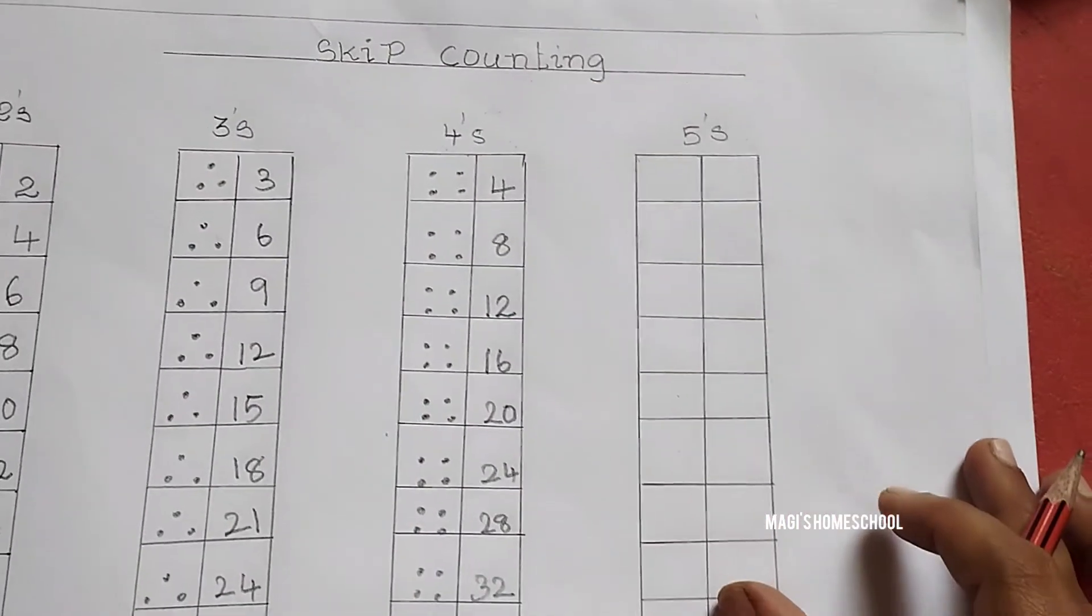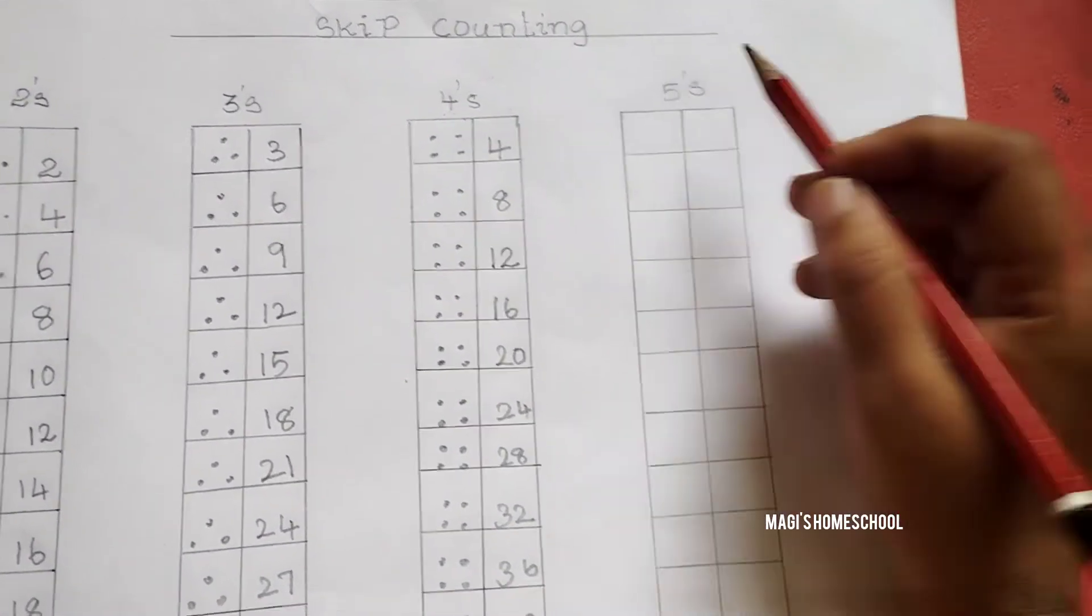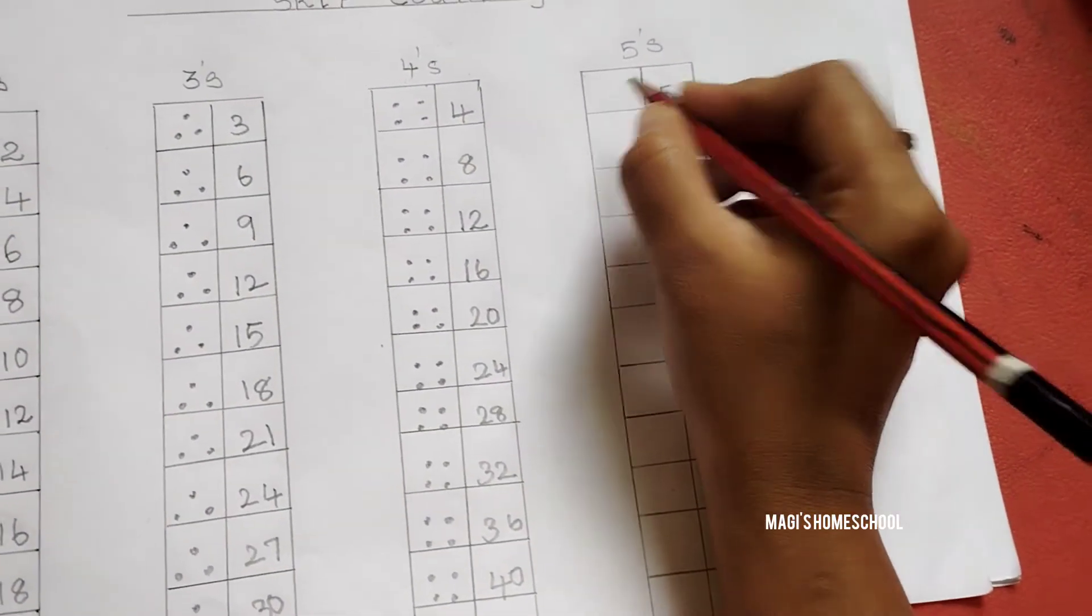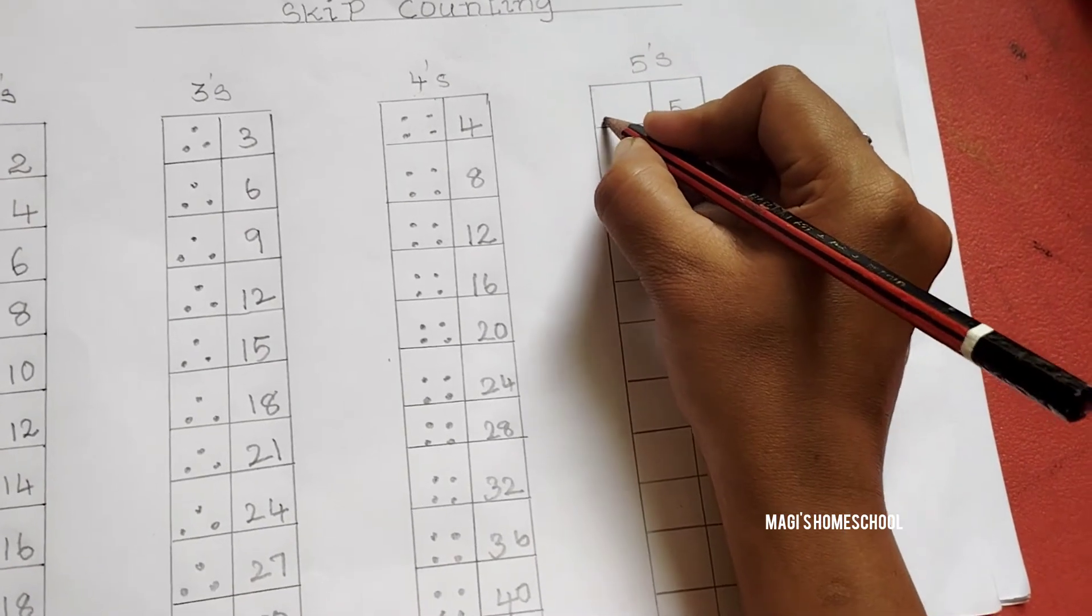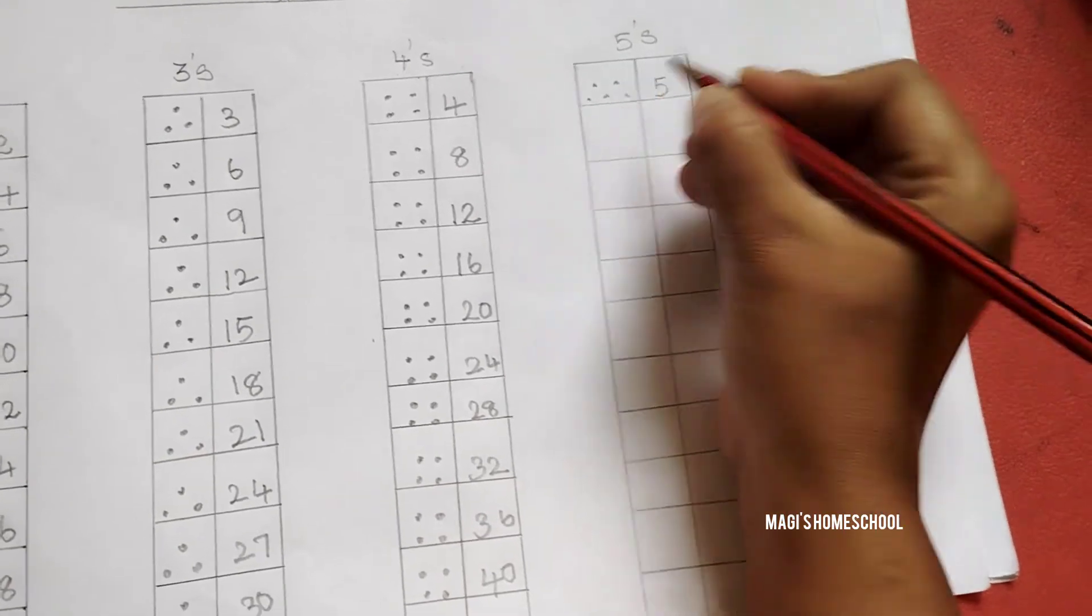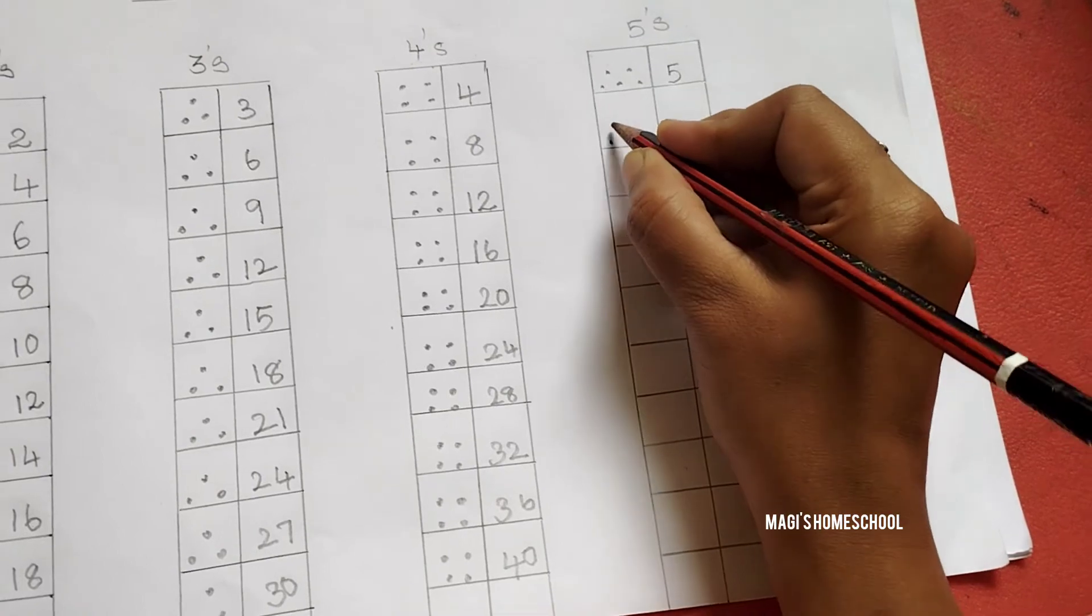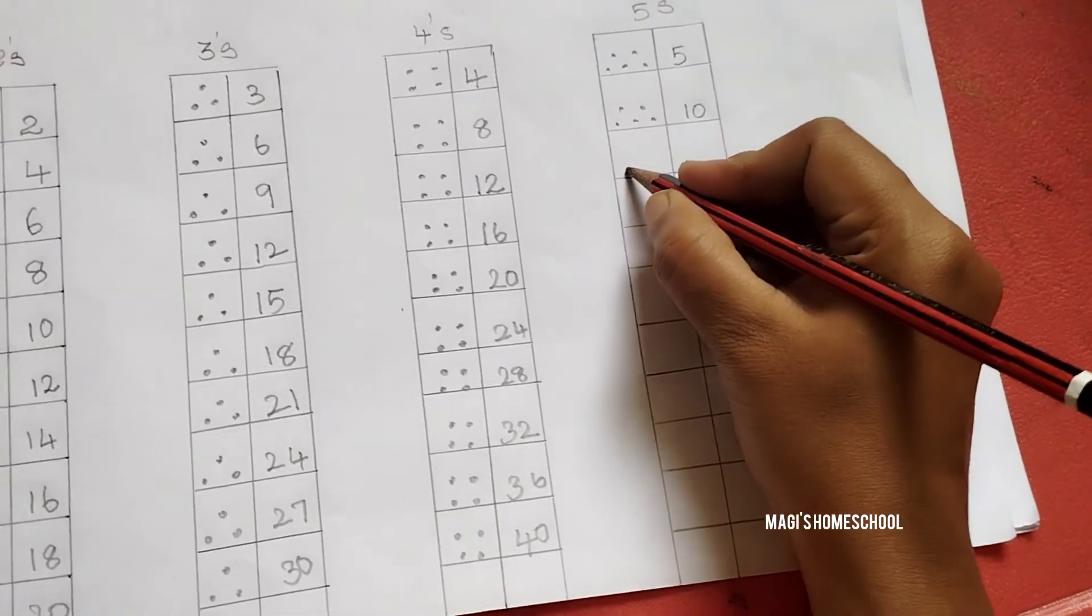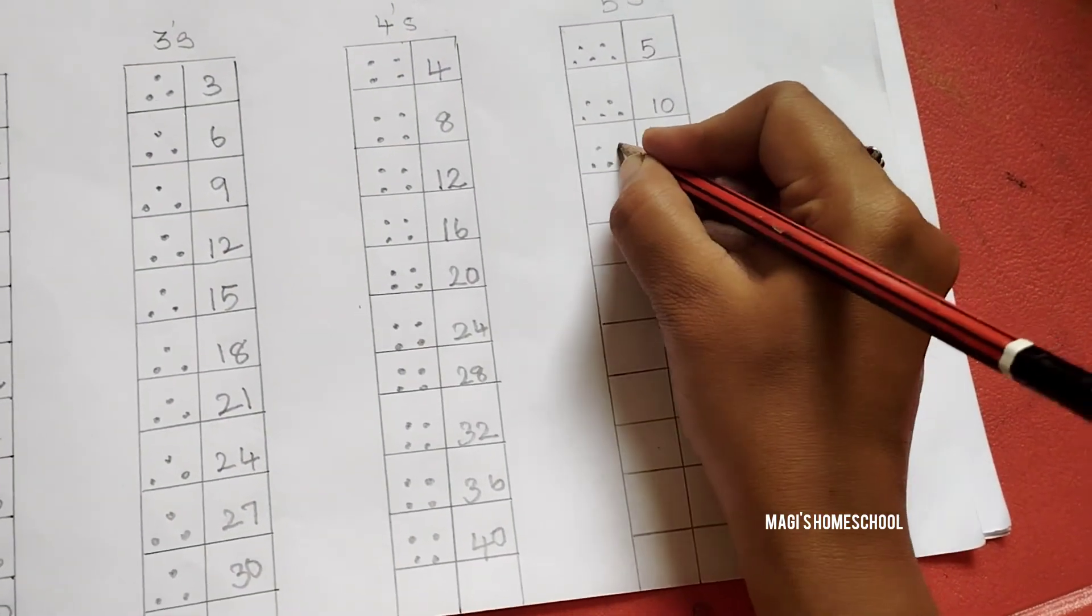Now let's move on to skip counting by 5. Now you have to make 5 dots. First the number starts with 5. 1, 2, 3, 4, 5. After 5, 6, 7, 8, 9, 10. Write 10. After 10, 11, 12, 13, 14, 15.